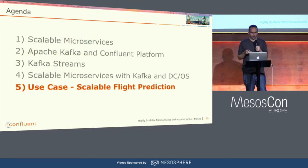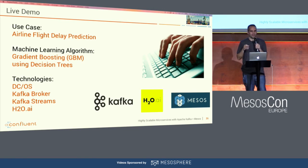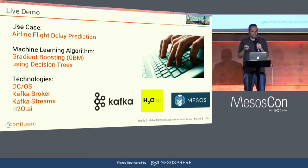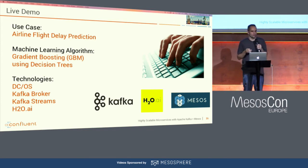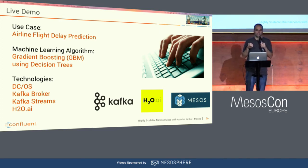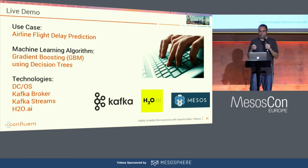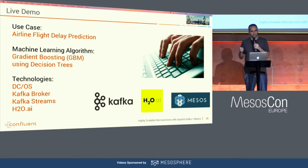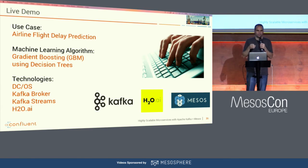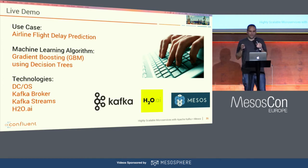Now let's look at a use case. I built a scalable flight prediction microservice, reusing one I've built before for machine learning with Kafka Streams demos. The technologies: DCOS, Kafka Brokers, and Kafka Streams. In Kafka Streams you can use any other library since it's just a JAR library. I embedded an analytic model built with H2O framework into my Kafka Streams application. The use case is airline flight delay prediction — predicting if future flights are likely to be delayed or not. I used decision trees, but no matter which stream process you want to implement, it would work the same way.